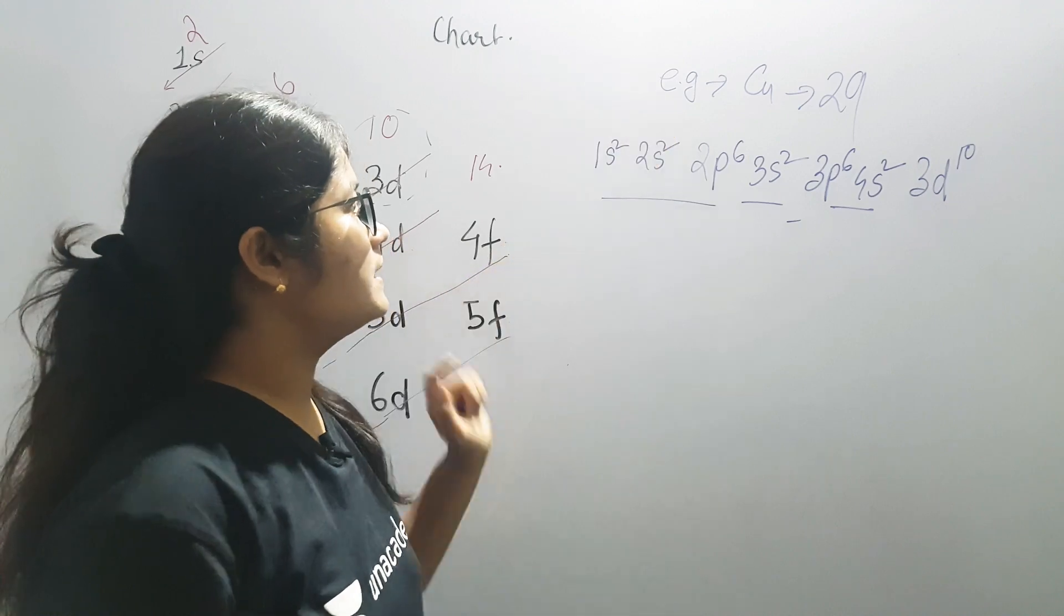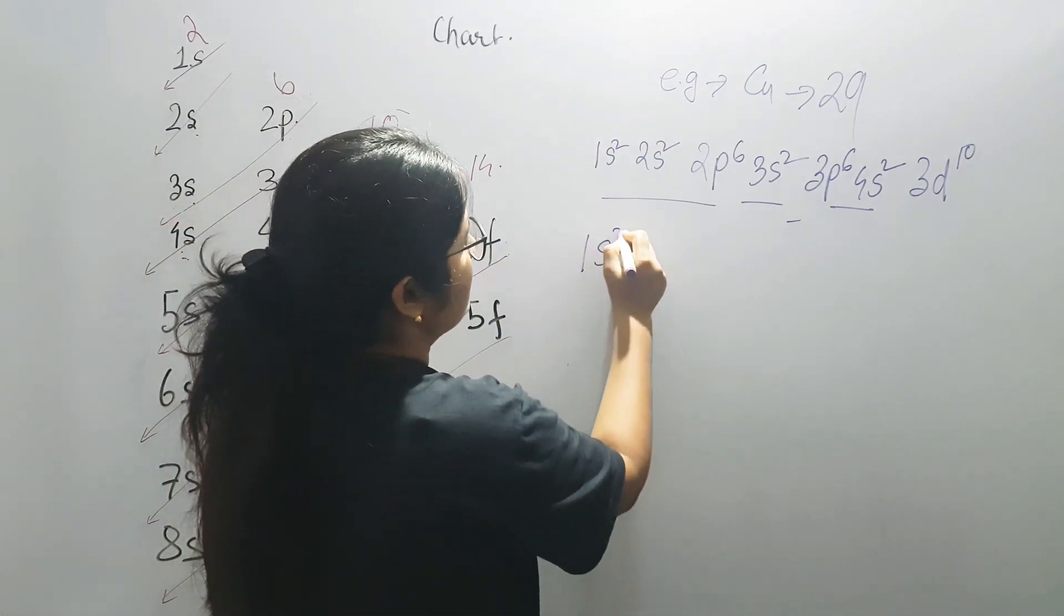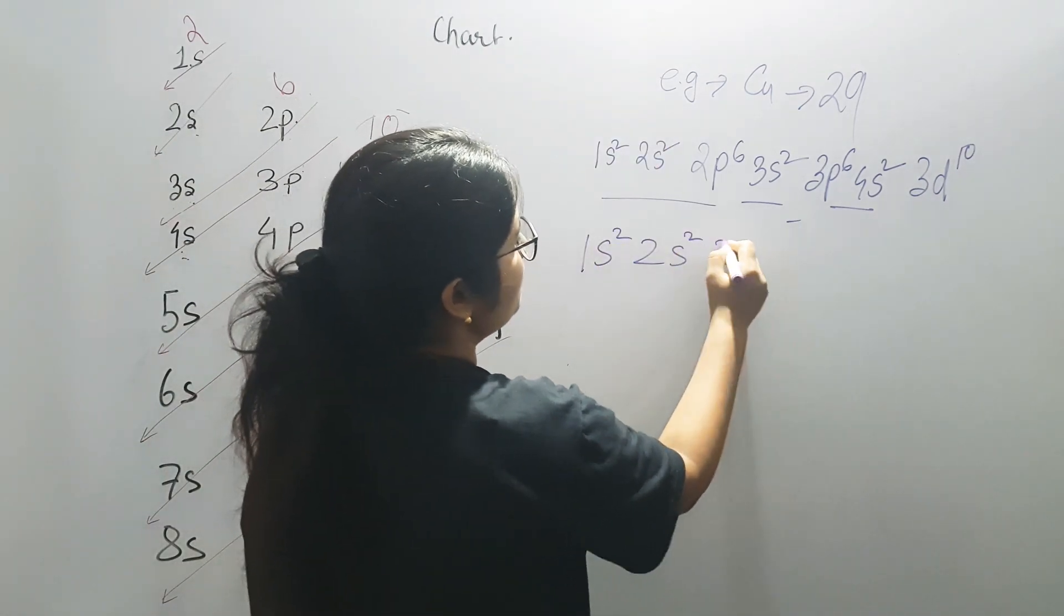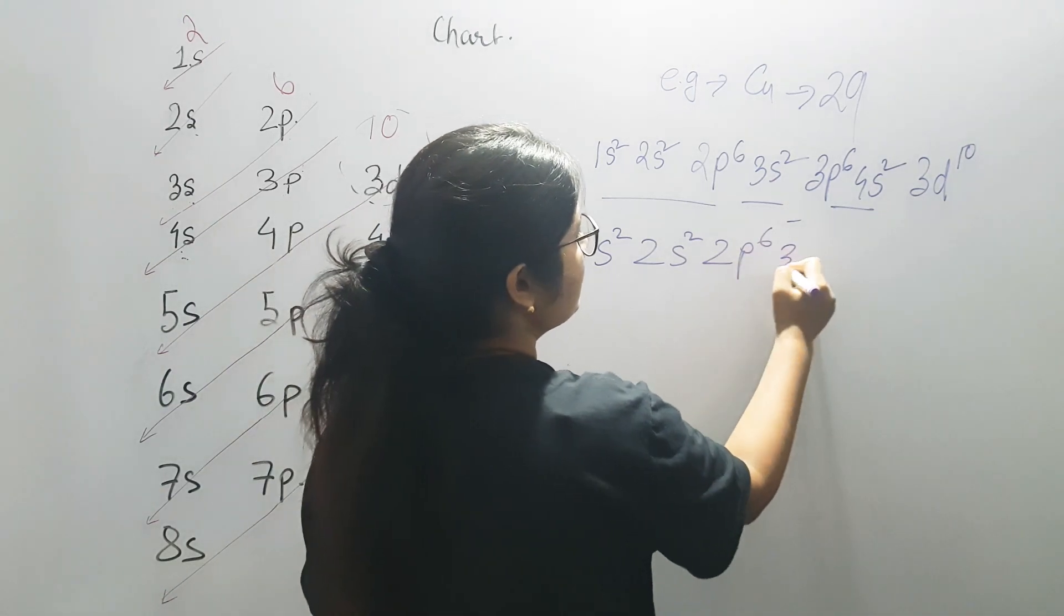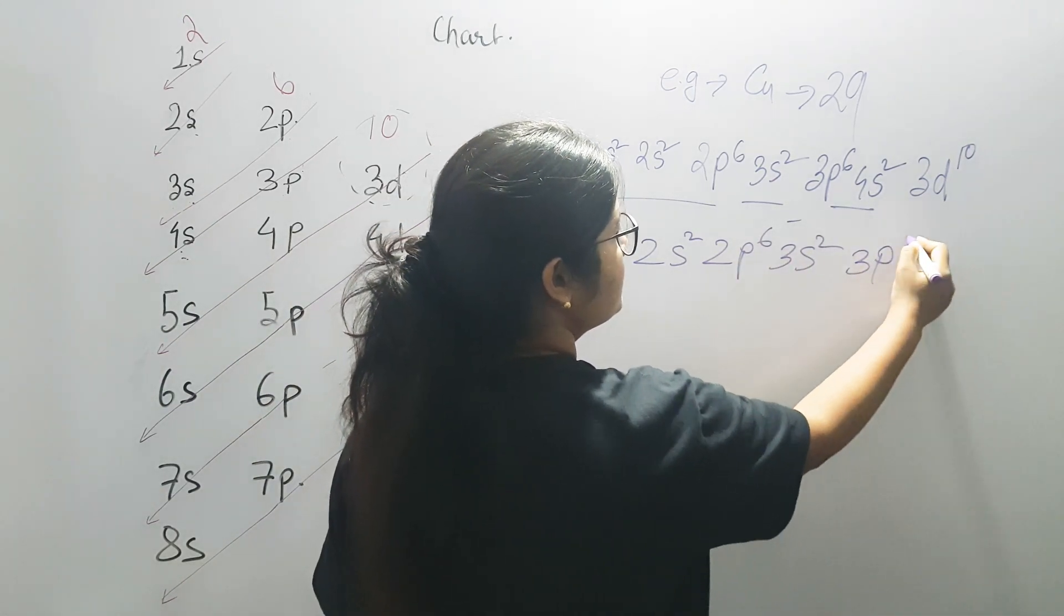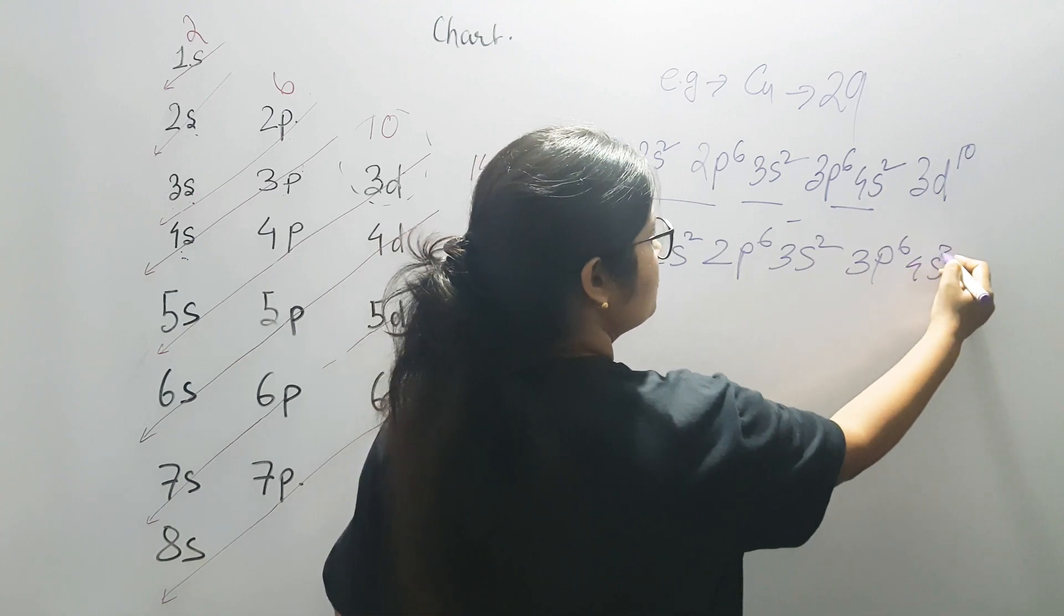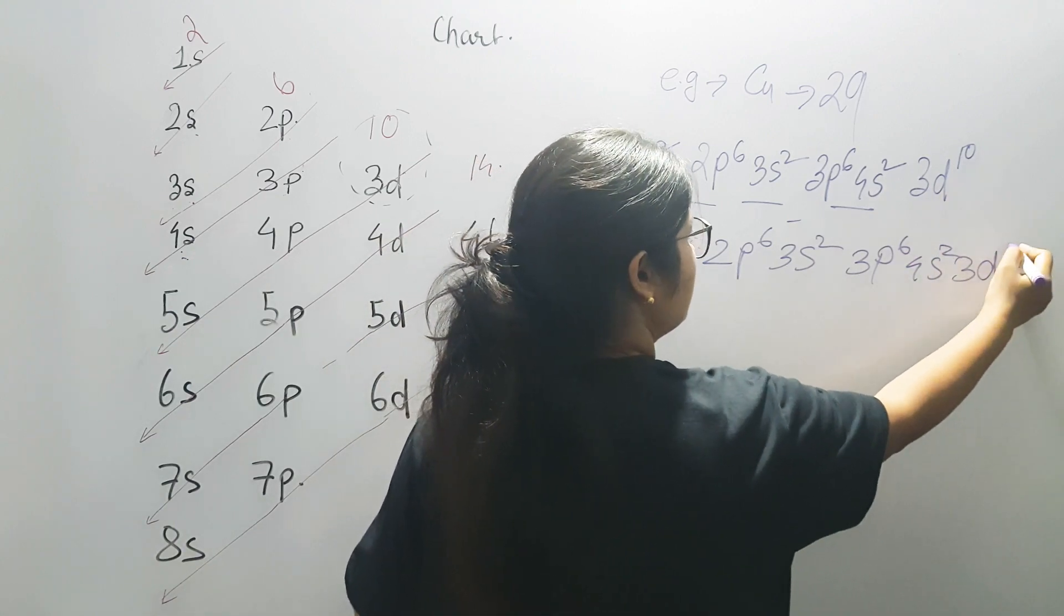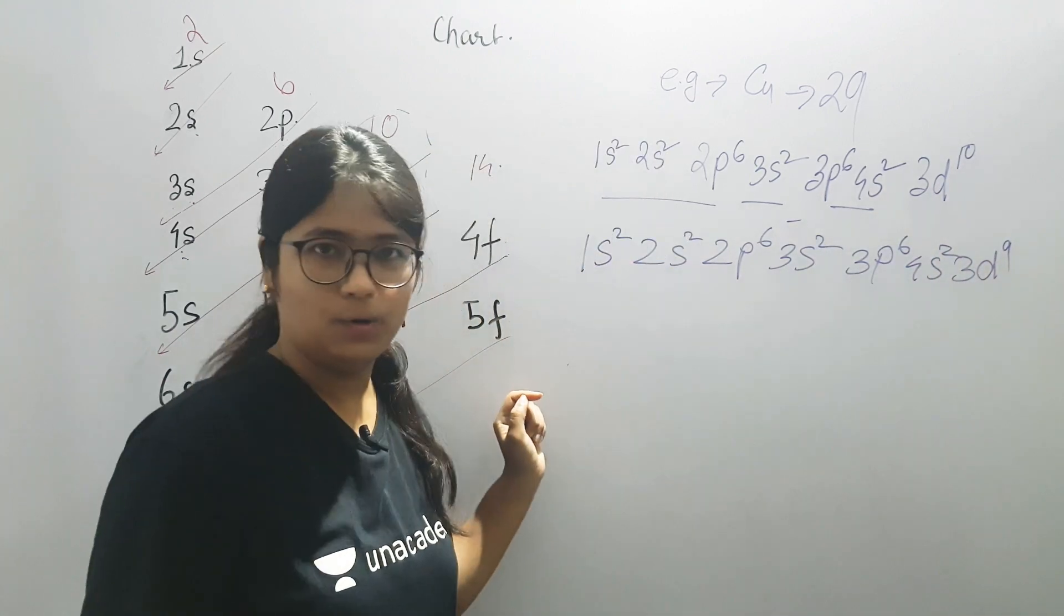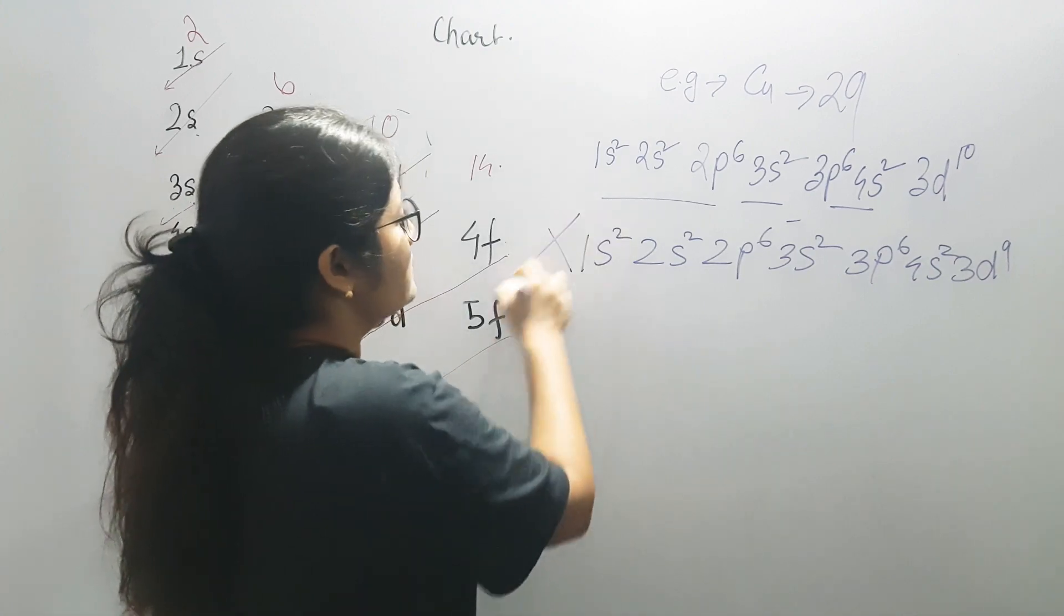We need copper. What will happen: 1s2, 2s2, 2p6, 3s2, 3p6, 4s2, 3d9, like that? No. Now see, this is wrong.